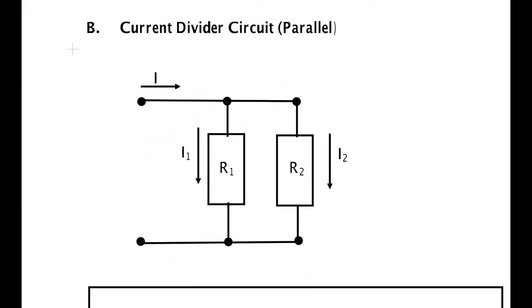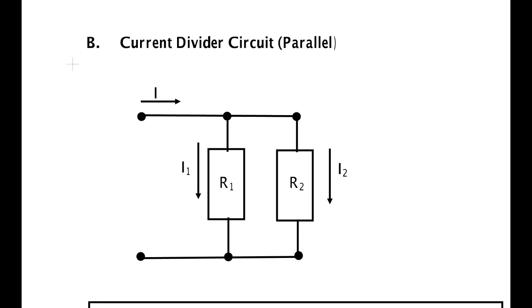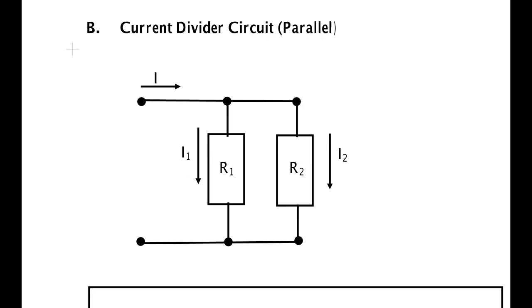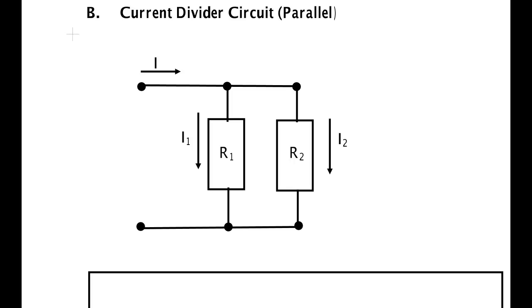The current divider circuit puts two resistors in parallel. One of them is usually called the load resistor and the other one is usually called the shunt, but for our purposes I've called them R1 and R2.